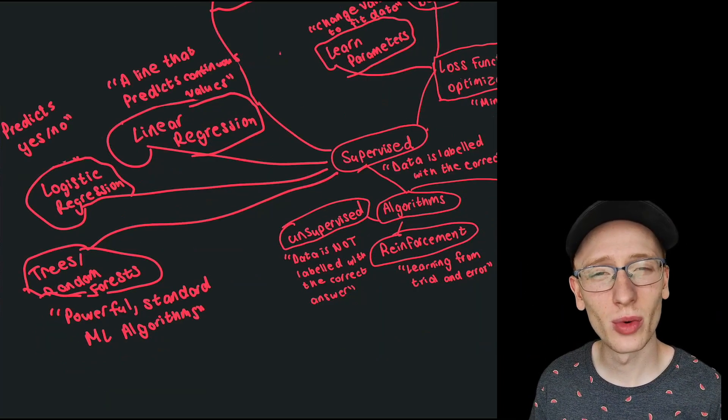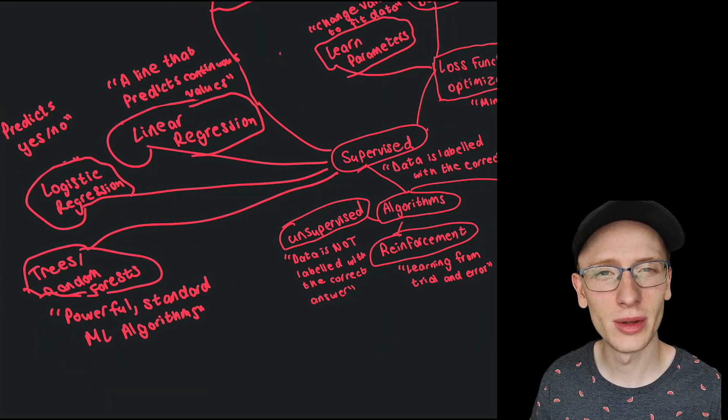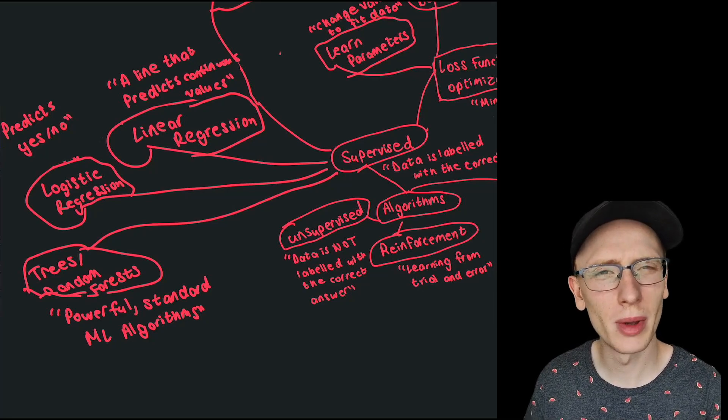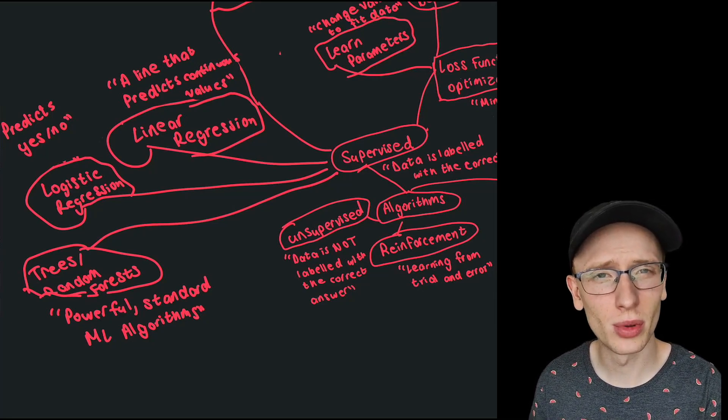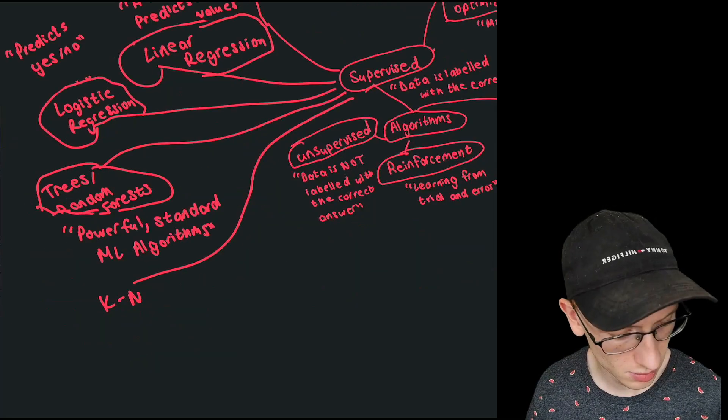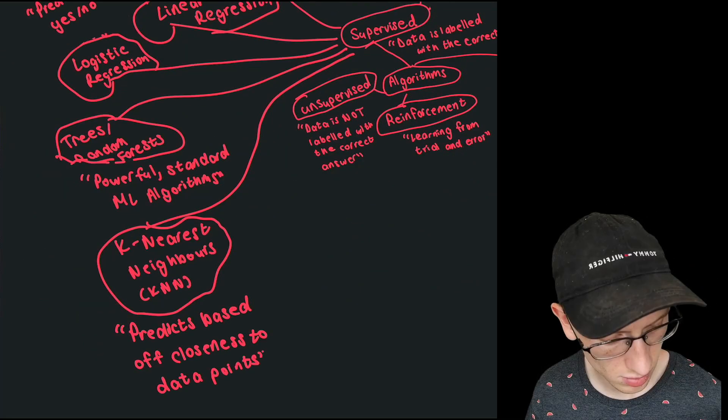I'm also going to write down one algorithm here called k nearest neighbors, or KNN. It really just remembers the inputs that were given. If you're close to these points, then you're probably this point.